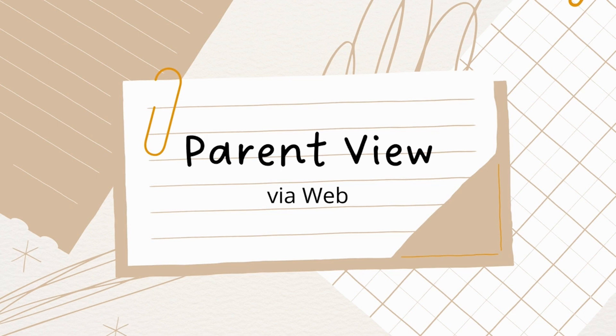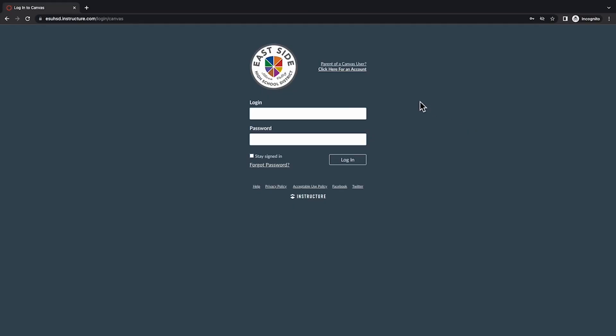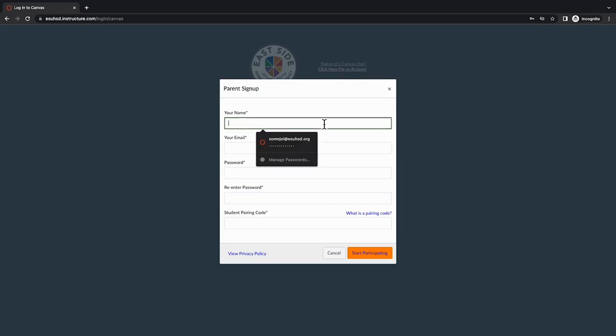Now that we have the code, we can register for a Canvas account as a parent or guardian. Pairing codes are required to register for the first time, so from the login page, click on Click Here for an account.